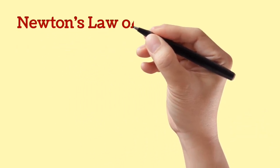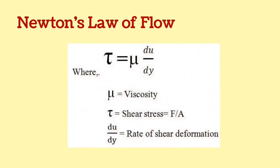Let's talk about Newton's law of flow. Tau is shear stress, which is also derived as F/A. This is proportional to du/dy, which is the rate of shear deformation, and Mu is defined as viscosity.